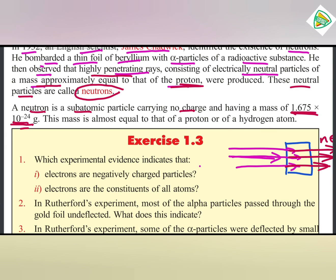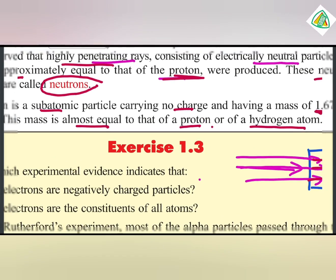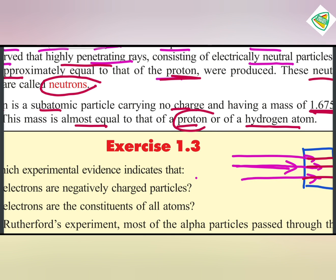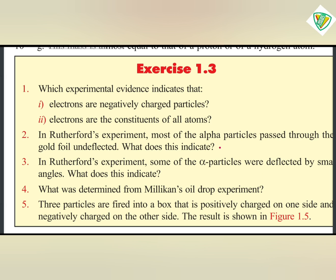The neutron mass is almost equal to the proton or hydrogen atom. Neutron mass is equal to the proton and hydrogen atom.